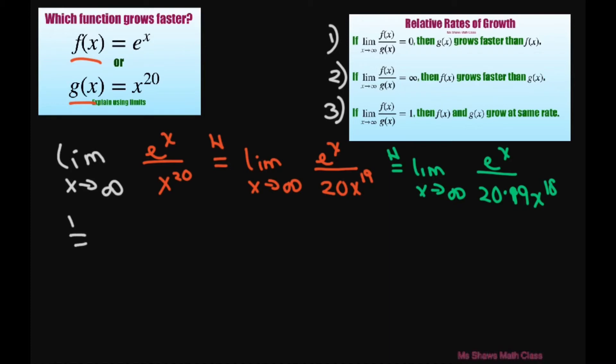We're going to use L'Hopital's rule again. E to the x and then we have 20 times 19 times 18 times x to the 17th. And we're going to do this 17 more times.